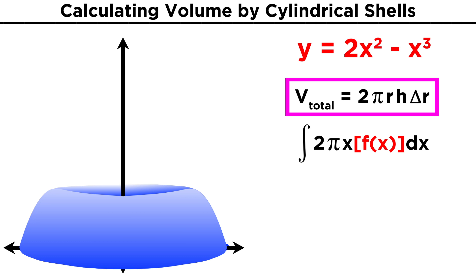In this case, F of X is two X squared minus X cubed, as we said. So let's plug that in for F of X, and then to simplify, we can take two pi out of the integral, but the X must stay, and it can be distributed across the other term. That leaves us with two pi times the integral of two X cubed minus X to the fourth, DX, evaluated from zero to two.